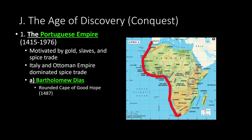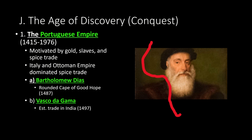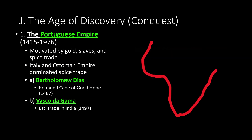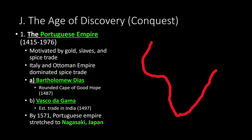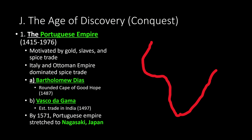Bartholomew Dias was the first to round the Cape of Good Hope — he was Portuguese. Another explorer, Vasco da Gama, was the first person to really establish trade in India in 1497. He went all the way around the coast of Africa and into Asia. By 1571, the Portuguese Empire stretched all the way to Nagasaki, Japan. Starting in 1450, they explored the coast of Africa, and about 120 years later, the Portuguese Empire stretched all the way into Japan.